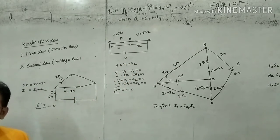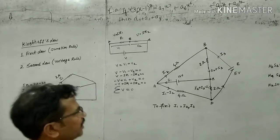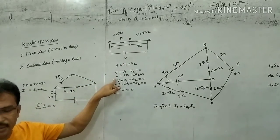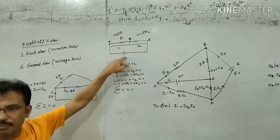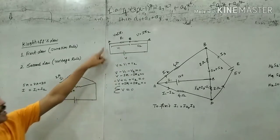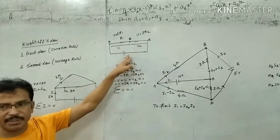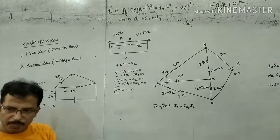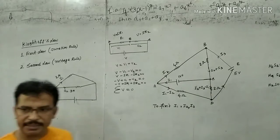We have a closed loop. Like: IR2 equals zero. However, you have a closed loop. Because we have positive terminal to negative terminal and negative to positive. So negative from positive to positive to negative to minus.